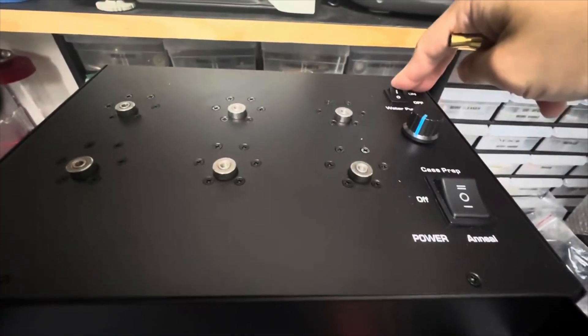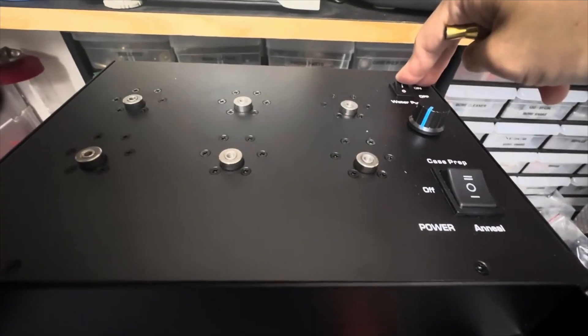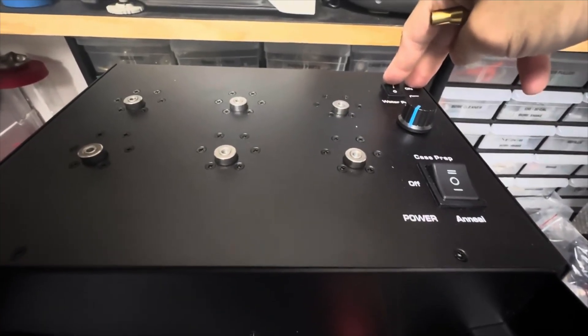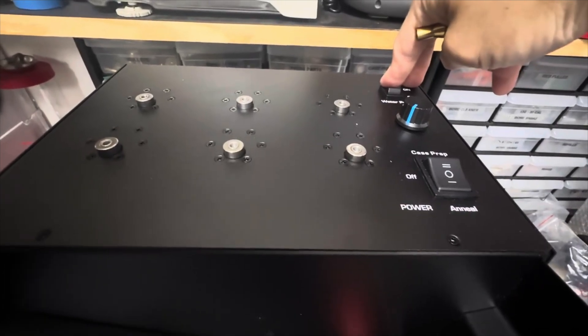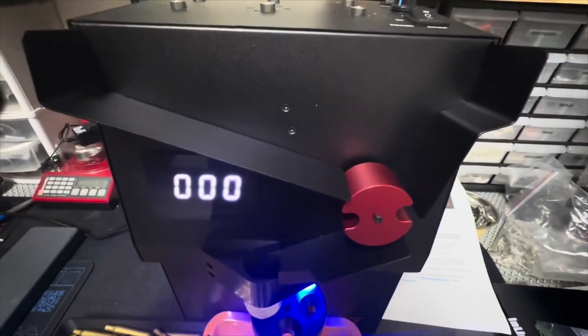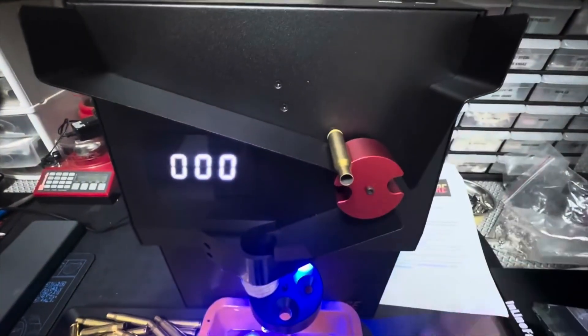Let's turn on the annealing function. But this time, let's turn on the water pump. So once we turn on the water pump, the heating coil is now active. Let's let it run for a few seconds. And let's feed one case here.